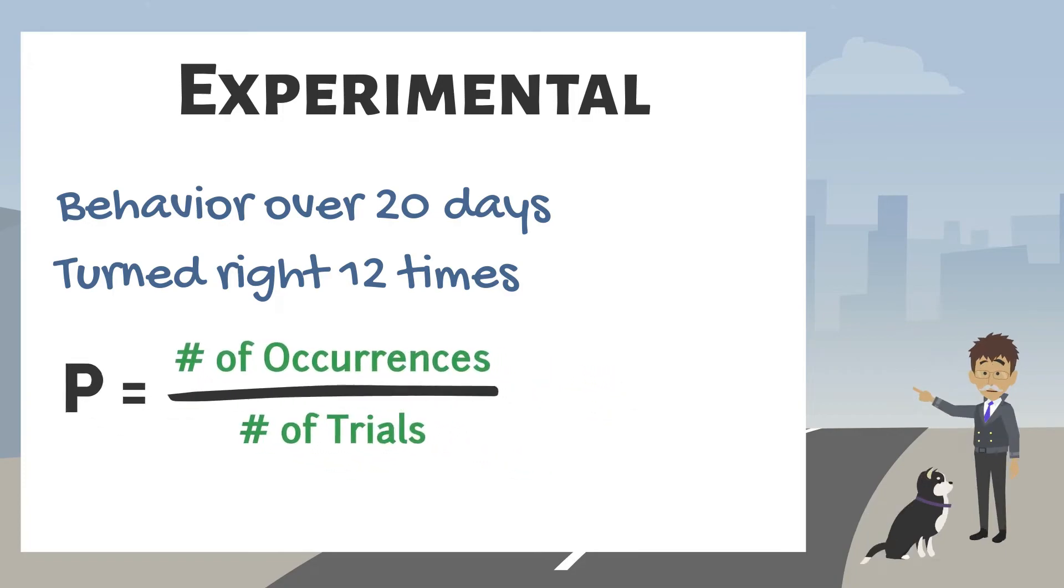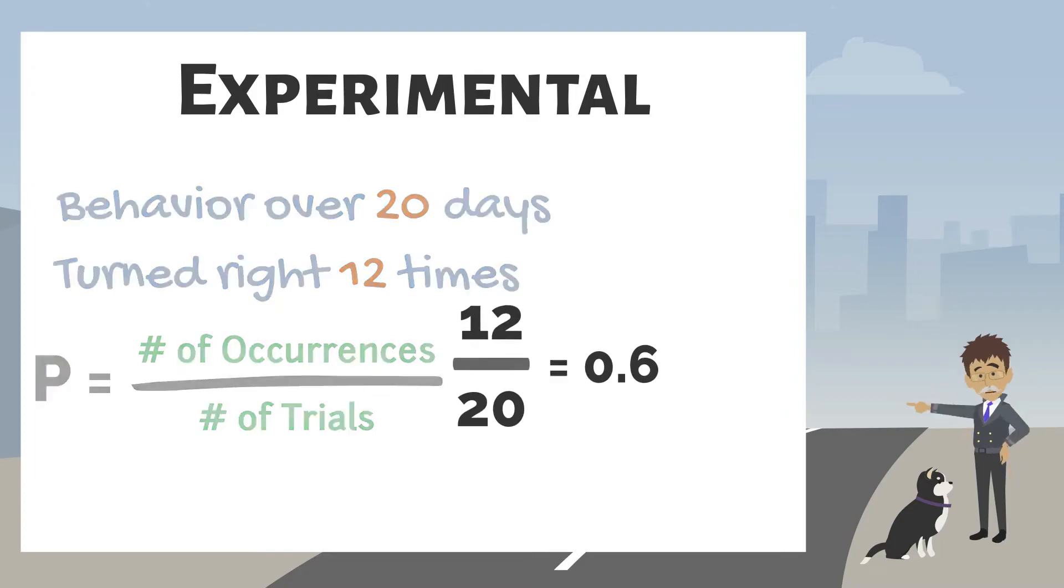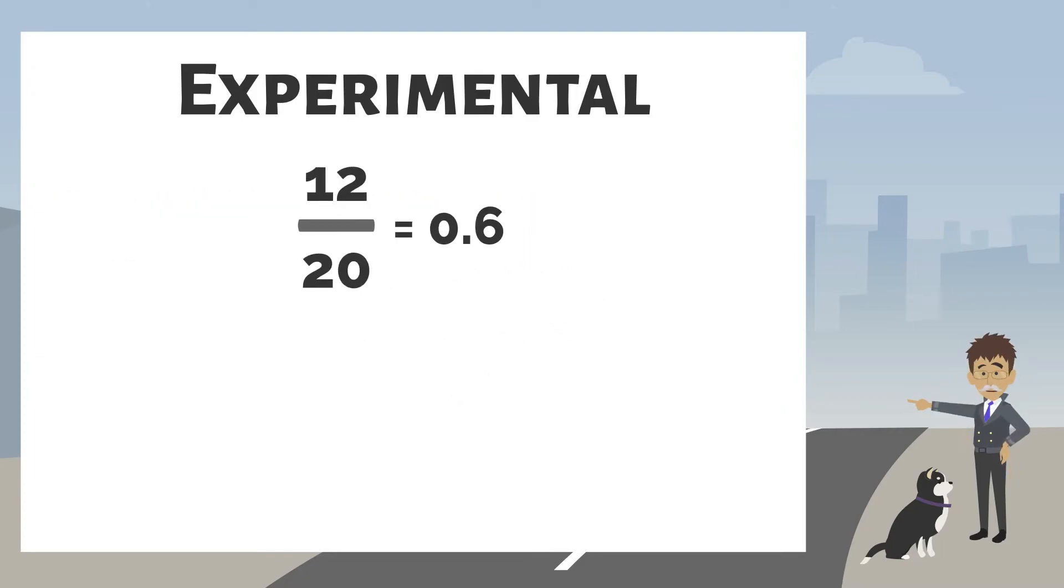In this case, the ratio of 12 occurrences to 20 observations is the decimal 6 tenths. This means the probability was 6 tenths or 60%. Notice how the experimental probability is different from the theoretical probability.